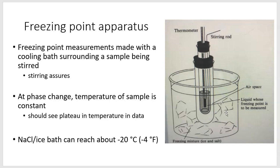You want to look for this plateau in the temperature, because that's going to be an indication that the phase change is occurring. We're going to use a sodium chloride ice bath — they are very effective at getting things cold. If you use about a one-to-three mixture of sodium chloride to ice and mix it really well, you can get minus 20 degrees Celsius, which is about minus 4 degrees Fahrenheit.